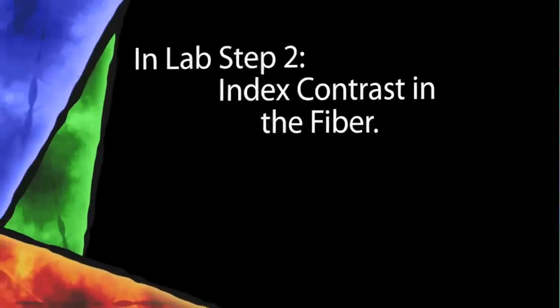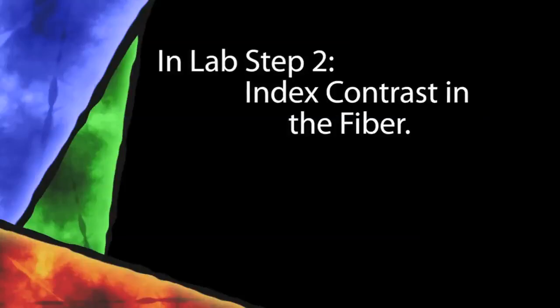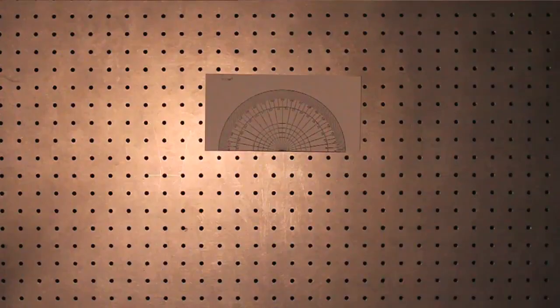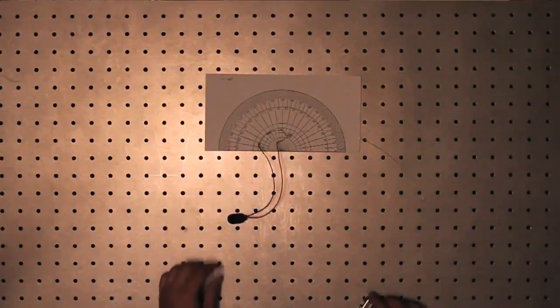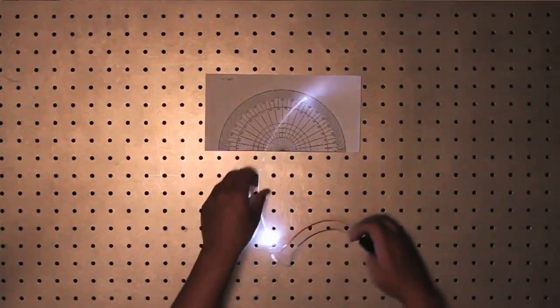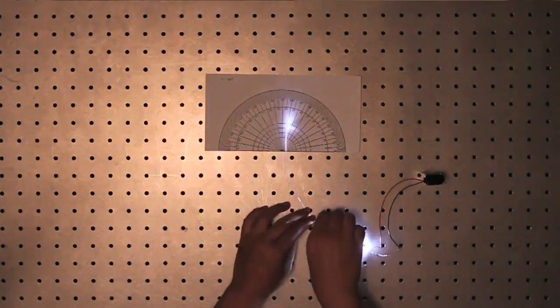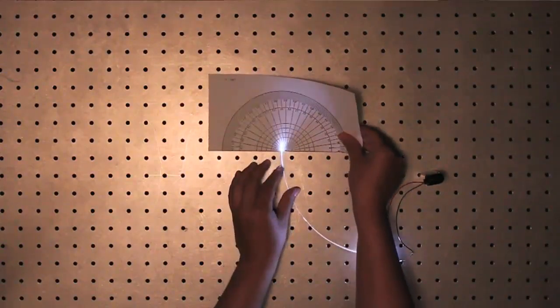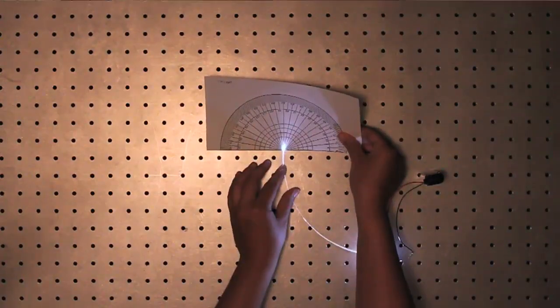Now you will observe the index contrast in the fiber. Using the LED coupled fiber you made in the pre-lab, the numerical aperture is easily found by observing the angle of the output light that's projected on a protractor. The refractive index of the fiber core is given in the handout. The numerical aperture formula allows you to easily calculate the refractive index contrast.